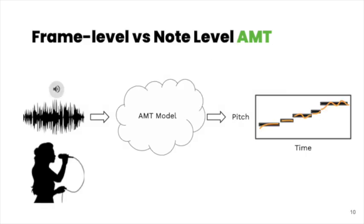Here, we'd like to highlight two different levels of representation in AMT: frame-level AMT and note-level AMT. In many recordings, notes do not have a constant pitch. For example, in a recording of a singer, each note evolves with time and can include variations such as vibrato. Frame-level AMT encodes fine-grained pitch information over time, whereas note-level AMT groups the information into note events with the center pitch. The majority of AMT systems output one or the other, but typically not both.